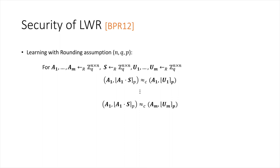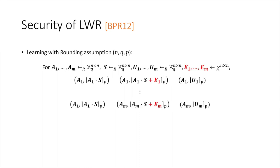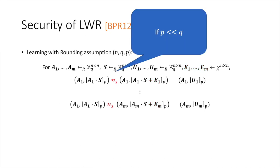Banerjee et al. showed this is the case via a hybrid argument. We want to show that given uniformly random matrices Ai and the rounded products Ai times S, the distribution is computationally indistinguishable from uniformly random matrices. As an intermediate hybrid, we introduce a distribution that provides Ai times S with both noise and rounding applied: Ai times S plus some noise E, then rounded. If Q is sufficiently larger than P, then with overwhelming probability, the added noise vanishes under rounding.